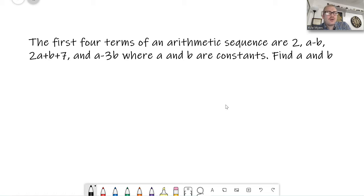So if we want to figure out what a and b are, remember, if it's an arithmetic sequence, that means I would have to add something to get from 2 to a minus b. If I have the sequence 2, 4, 6, 8, dot dot dot, what is the common difference? What am I doing each time? I'm adding by 2 each time. Adding 2 each time.